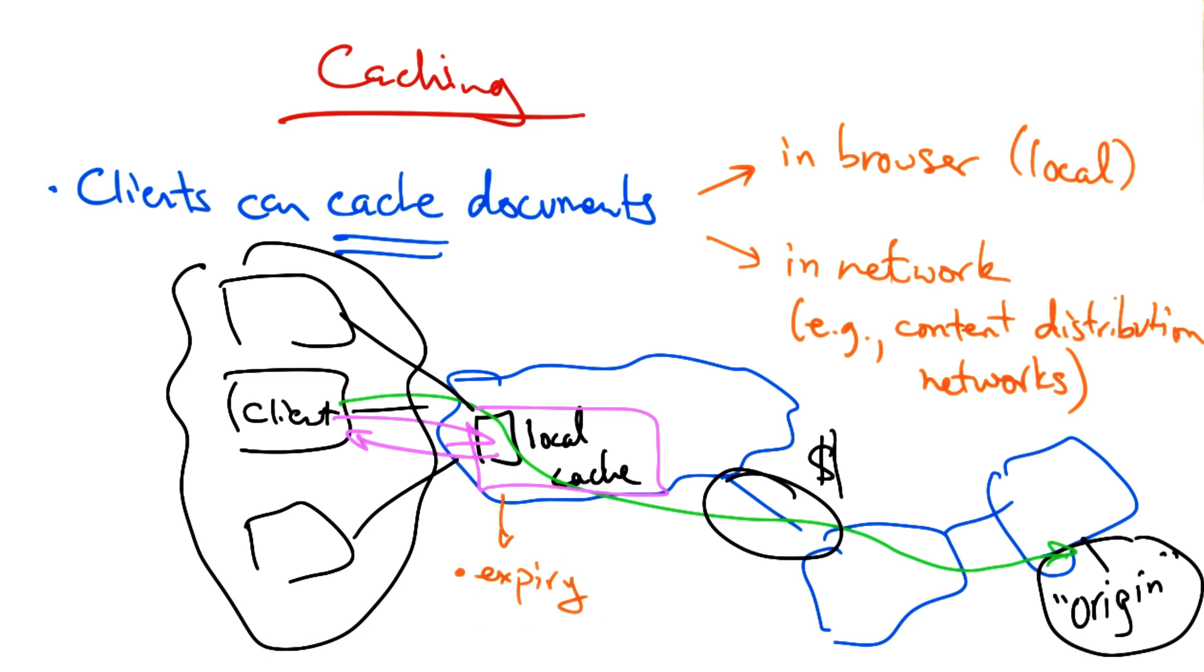To ensure that clients are seeing the most recent version of a page, caches periodically expire content based on the expires header. Caches can also check with the origin server to see whether the original content has been modified. If the content has not been modified, the origin server would respond to a cache check request with a 304 or not modified response.